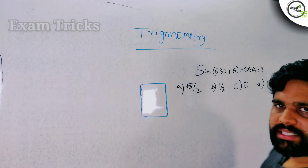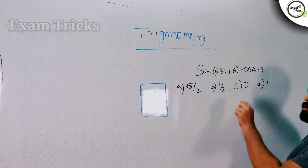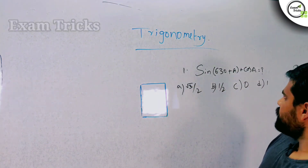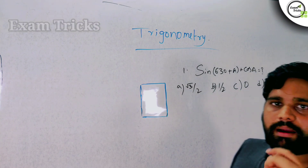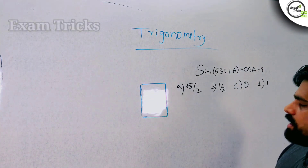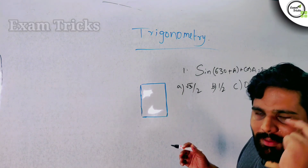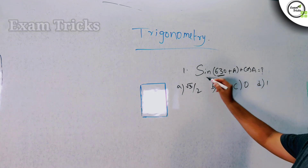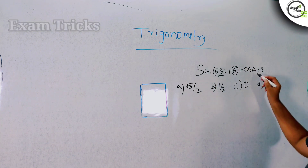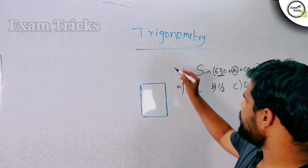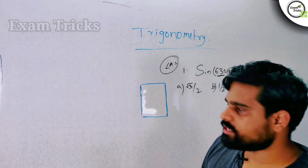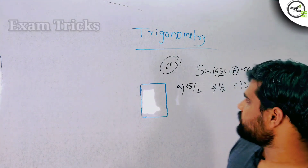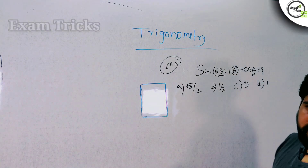How do we solve this? The angle A is not a specific value — there is no fixed angle A given. So if you want to solve it, you cannot just substitute a value. You need to simplify the expression using basic trigonometry concepts.